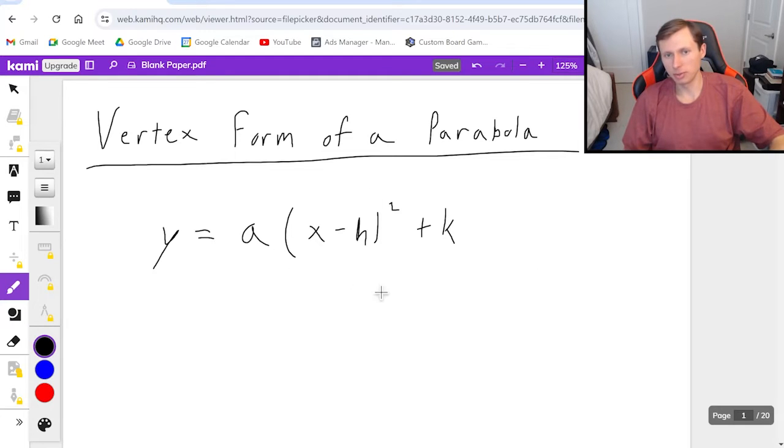Now let me tell you what all these variables mean. A is kind of a coefficient, a scaling factor. The only thing you really need to know for a is that if a is greater than zero, in other words it's positive, that's when the parabola opens upward. And when a is less than zero, that's when the parabola opens downward.